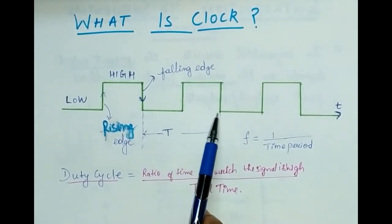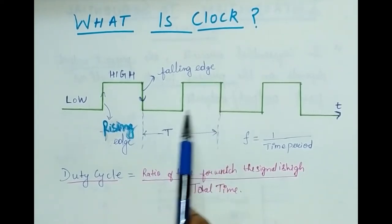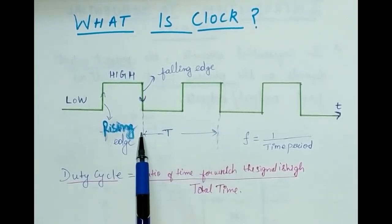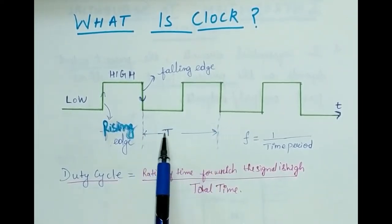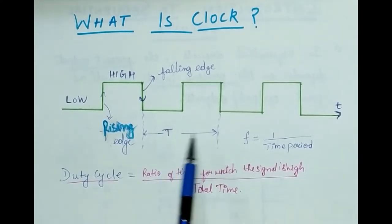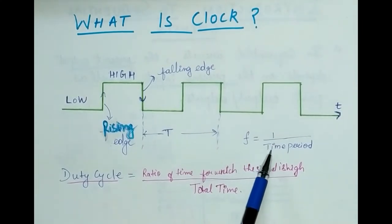If we take one cycle, this is the time period, represented by T. Frequency is 1 divided by the time period, or 1/T.